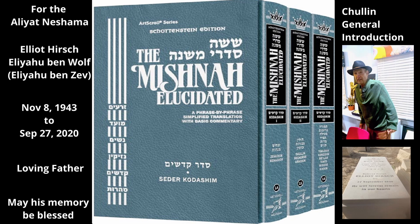The third chapter deals with the laws of Terefa, an animal with a fatal defect that makes it forbidden to be eaten even if it is properly slaughtered. The fourth chapter deals with laws that pertain to the fetus of a slaughtered animal. The fifth with the prohibition against slaughtering an animal and its offspring on the same day. The sixth with the obligation to cover the blood of a slaughtered Chaya, a non-domesticated species of animal or bird.